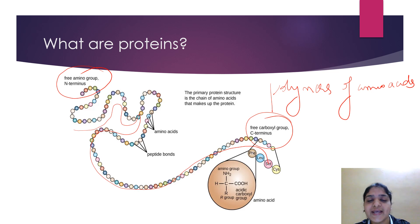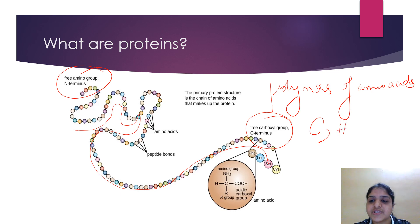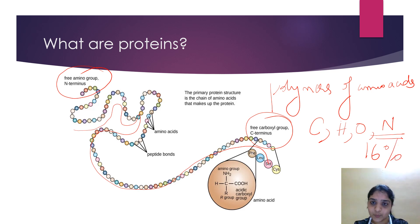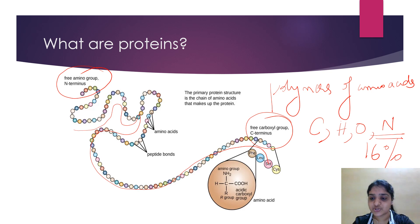Which are the elements present in proteins? They mainly consist of carbon, hydrogen, oxygen, and nitrogen. Nitrogen is a characteristic element of protein. On average, the nitrogen content of proteins is 16% by weight.